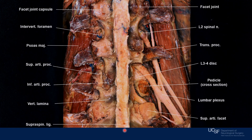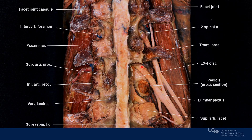Superficially, the supraspinous ligament. On the right side, we see the facet joint after removing the capsule. We see an exposure of the nerve root after removing the lamina, transverse process, and the facet joints. This is the posterior portion of the pedicle, and we see how the nerve root runs in an oblique fashion.